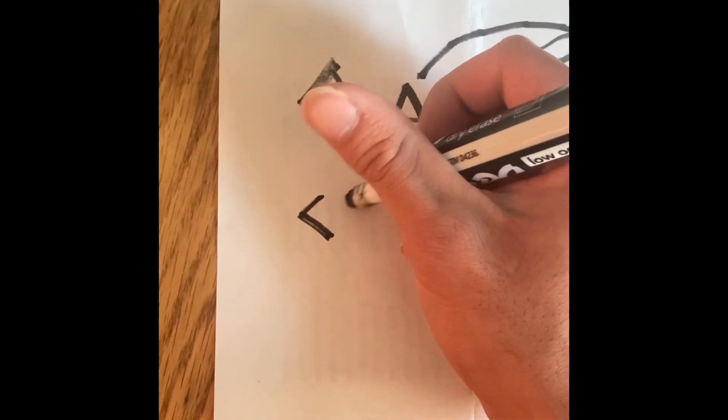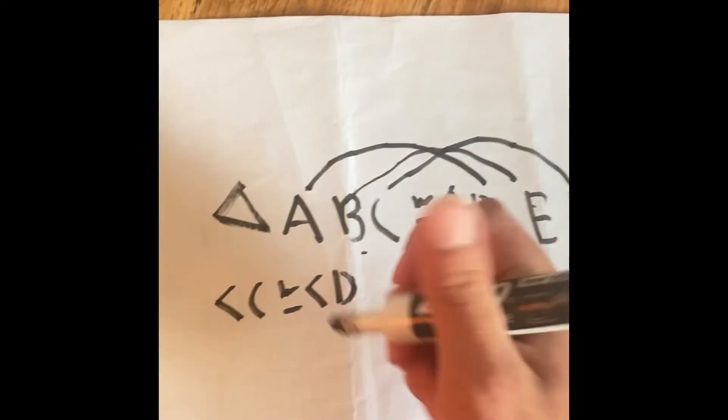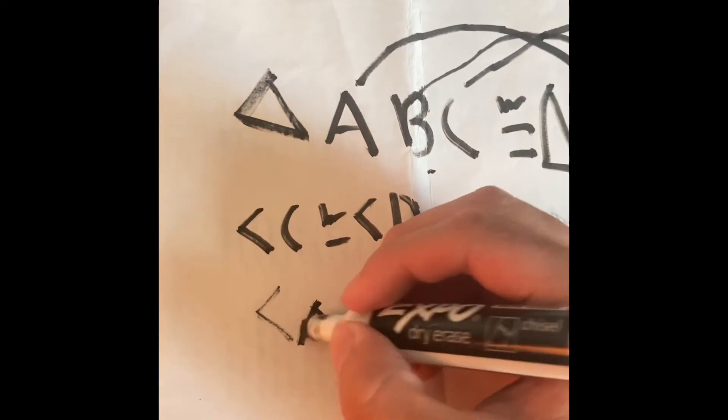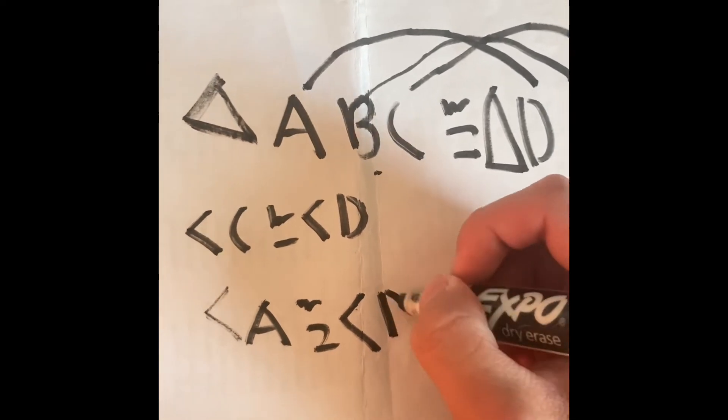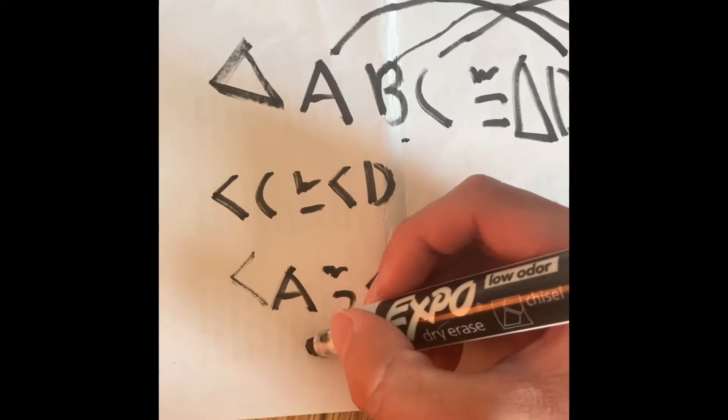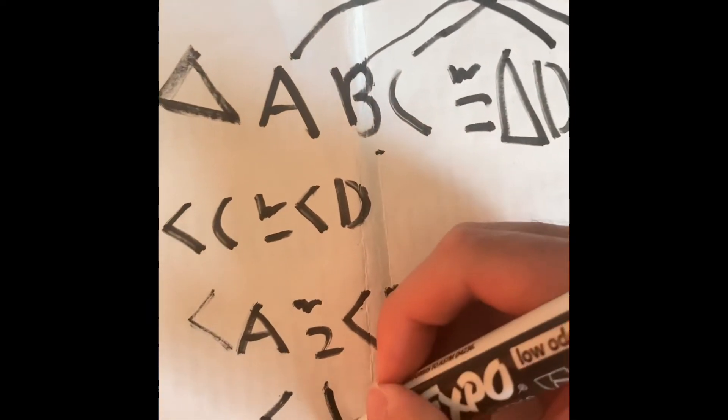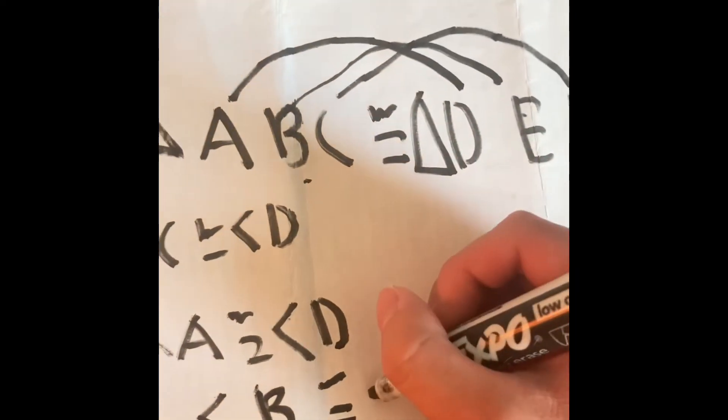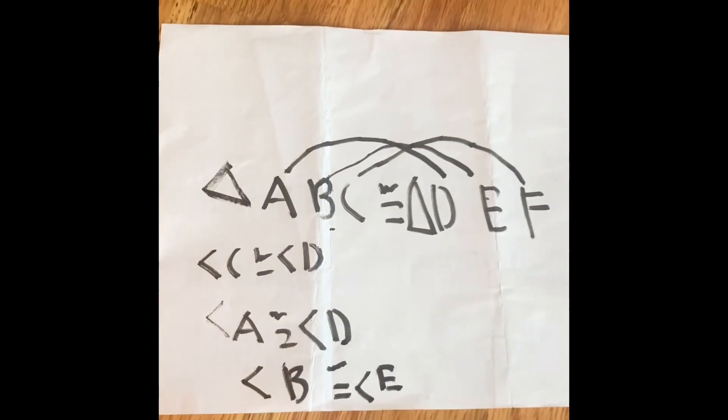We can say angle A is congruent with angle D because they're connected. Angle A is going to be congruent with angle D. Angle B is going to be congruent with angle E.